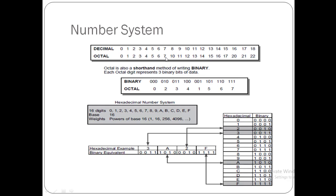The octal system has 8 digits: 0, 1, 2, 3, 4, 5, 6, 7 — there is no 8 or 9. After 7 it starts from 10, 11, 12, 13, 14, 15, 16, 17 — there is no 18 or 19; after 17 it goes to 20. The binary system uses only 0 and 1. The hexadecimal system consists of 16 digits: 0 through 9, then A, B, C, D, E, F. Its base is 16, octal base is 8, binary base is 2, and decimal base is 10.